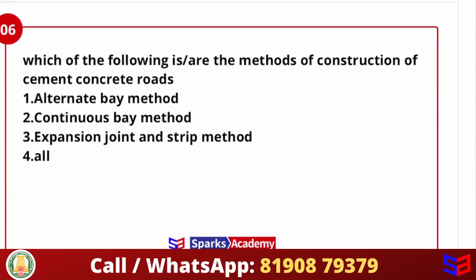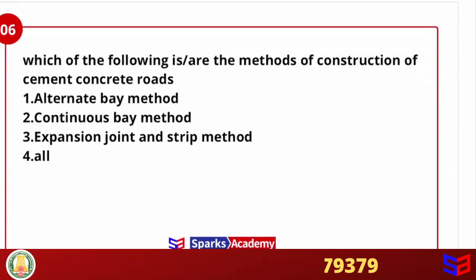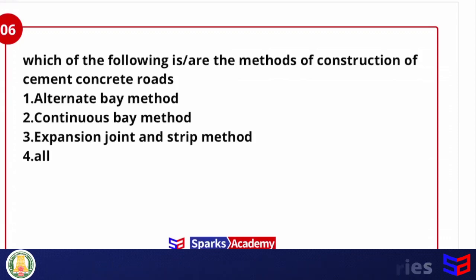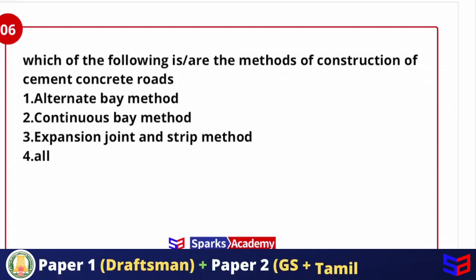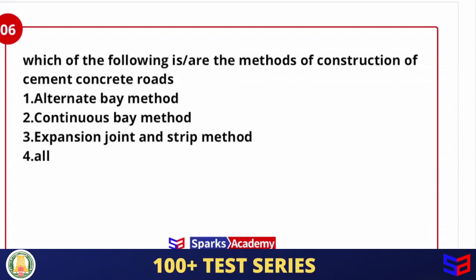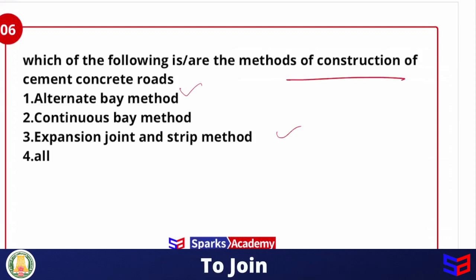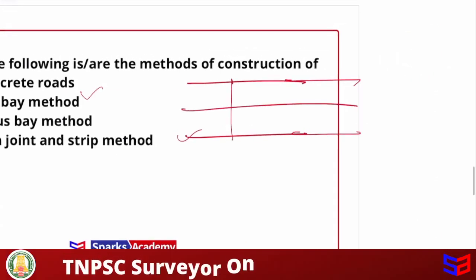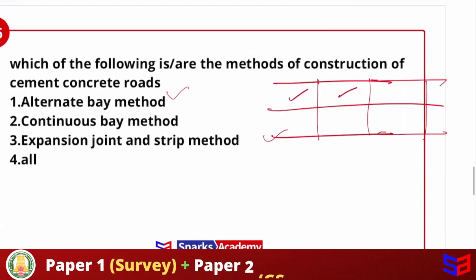Which of the following are methods of construction of cement concrete? Options: Alternate Bay Method, Continuous Bay Method, Expansion Joint and Strip Method, or all. In the Alternate Bay Method, the road is constructed in a longitudinal direction in alternating bays — for example, bays 1, 3, 5 are constructed first, then after drying, bays 2, 4, 6 are constructed.